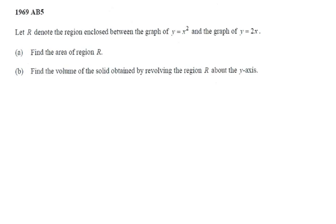Okay, 1969 AB5. What we have here, instead of the previous one which was just the area under one curve that's revolved, here we're going to have the area between two curves. We have the curves y equals x squared and y equals 2x.